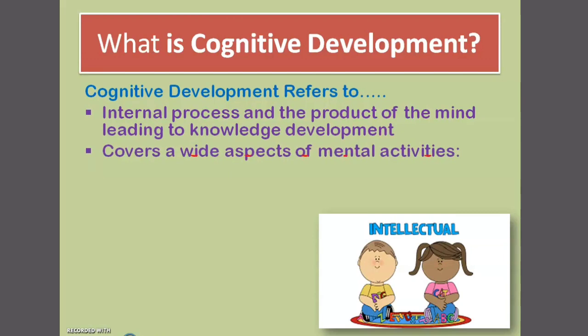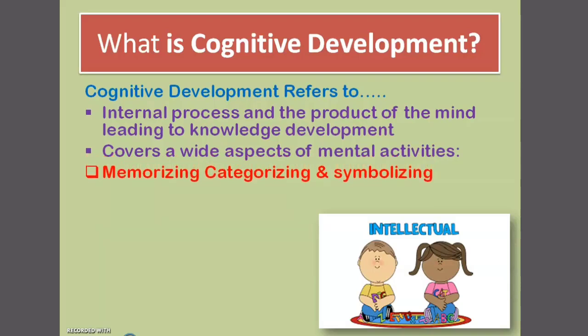Cognitive development covers a wide aspect including memorizing, categorizing, and symbolizing. Memorizing means to memorize anything which you learn — language helps in memorizing. Next is categorizing: in order to categorize what you have learned, language helps in the development of categorizing. Then symbolizing — the letters in language are symbols.